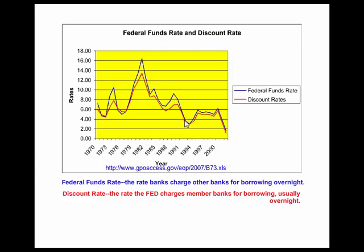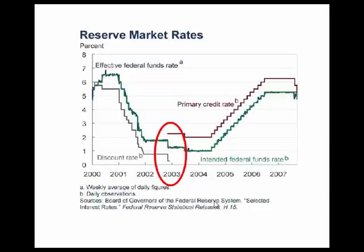Since the Fed wants to be the lender of last resort, in October 2003, the Federal Reserve changed the term discount rate to what's called the primary credit rate. They set the primary credit rate 100 basis points or 1% above the federal funds targeted rate.